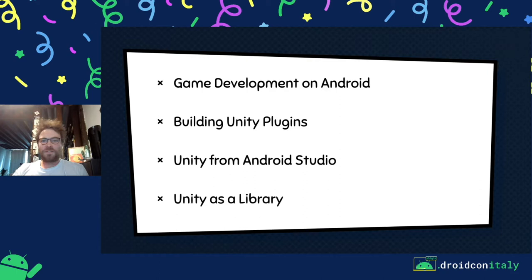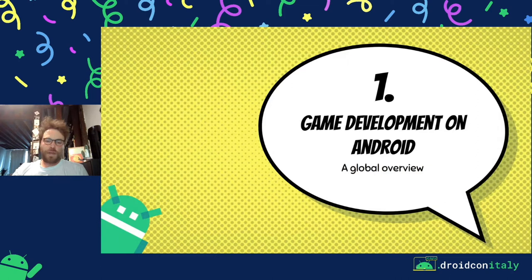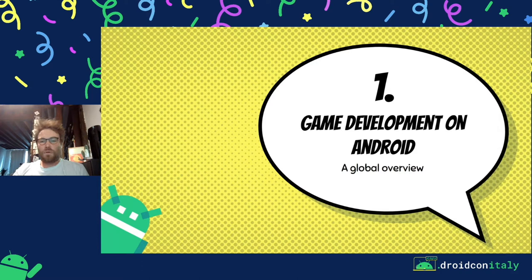Let's talk about game development on Android. You can develop a game from scratch using basic Android functionality — for example building a simple game like a maze or a snake using basic Android components. But if you want to build high-quality games, you'll need to look into game engines that provide high-quality graphics and a great game experience.